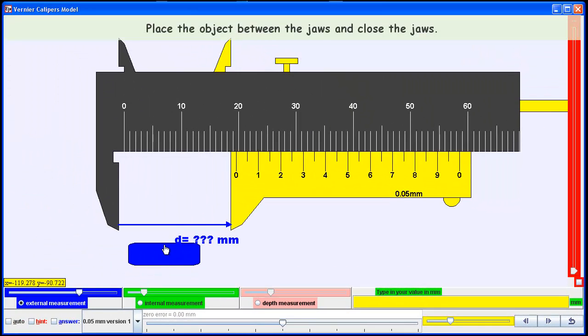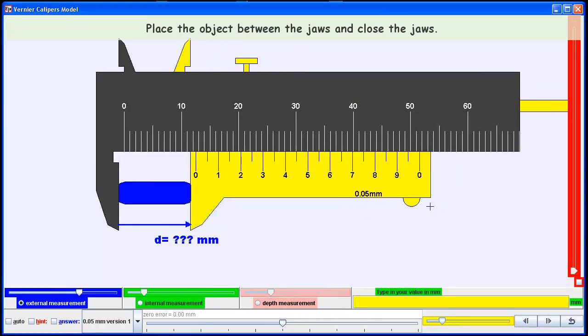Now click on the object and put it inside the jaws. Close the jaws until they can no longer move.